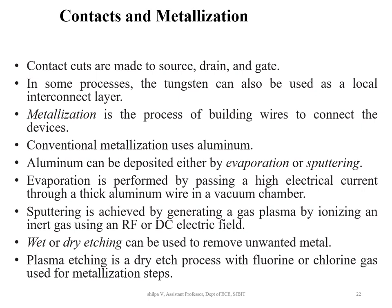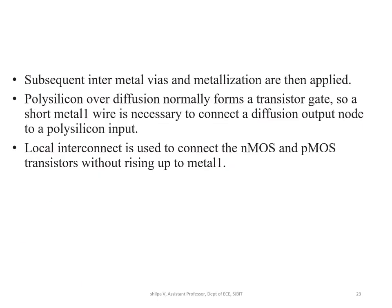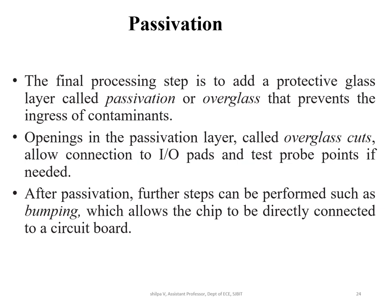Contact cuts are made to source, drain, and gate. In some processes, tungsten metal is used. Metallization is the process of building wires to connect devices. Aluminum can be deposited either by evaporation or sputtering. Evaporation is performed by passing a high electric current through thick aluminum wire. Sputtering is achieved by generating gas plasma. Passivation is the final processing step, adding a protective glass layer that prevents contaminants. After passivation, further steps like bumping can be performed.